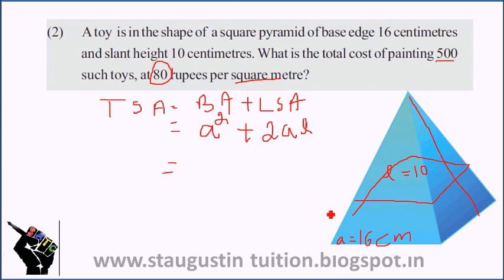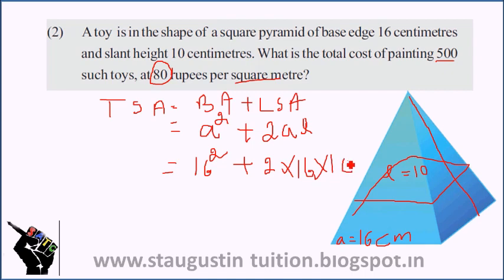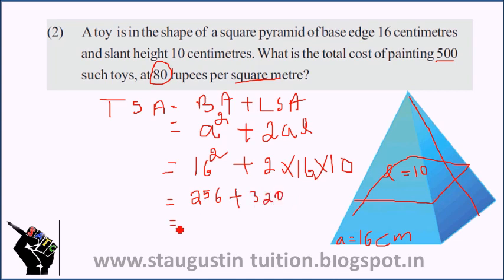We know that a is 16, so we calculate 16² + 2 × 16 × l, where l is 10. So 16² is 256, plus 2 × 16 × 10, which is 320. The total surface area is 576 cm².